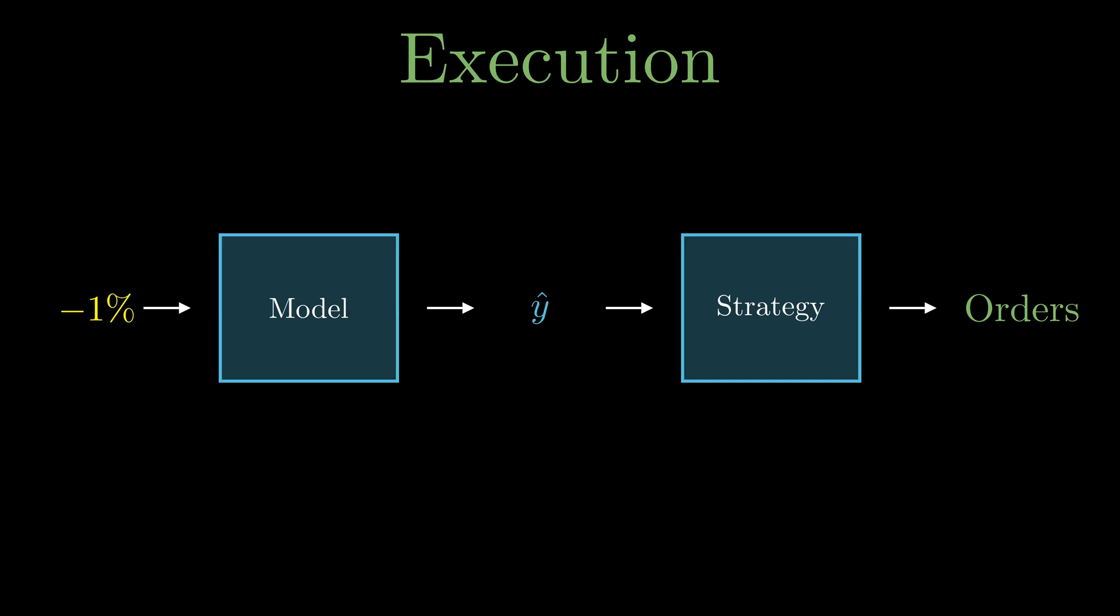Let's say the model receives an input which is a price return of -1%. The model predicts the future price return based on this input - it predicts the price is going to move up by 0.5% in the future. This prediction is passed into the strategy and outputs an order. The strategy outputs a number that encodes both the trade size and direction. The trade size is 2.1, which means it should buy 2.1 units. The trade direction is encoded as the sign of the number, which is positive, so it represents going long - betting that the price goes up.